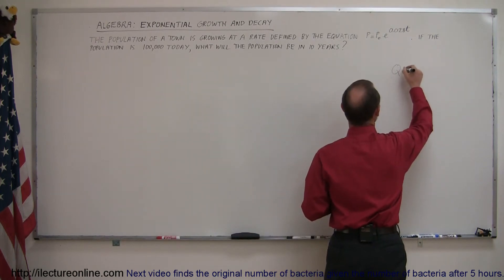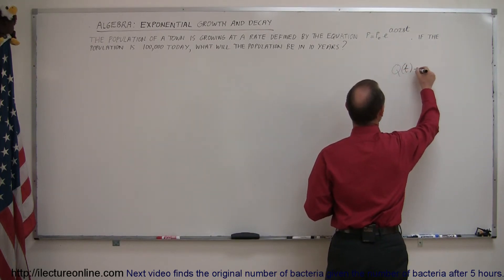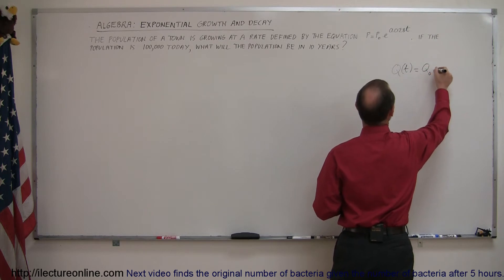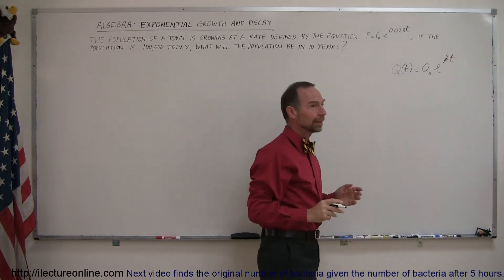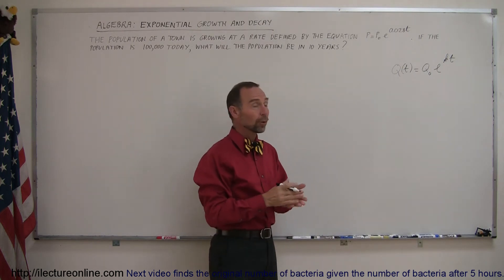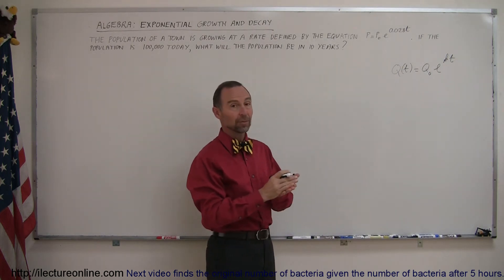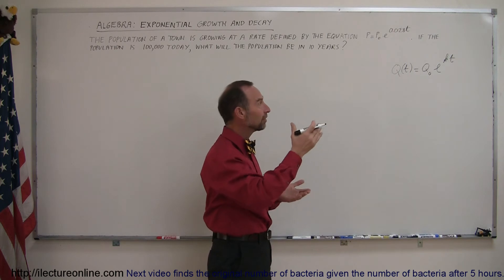The quantity as a function of time is equal to the initial quantity times e to the k times t. Now k is just a constant. It's called the growth constant, and if k is a positive number, then the quantity is increasing.